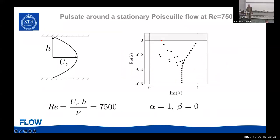We use Poiseuille flow at Reynolds number 7500. This is a typical eigenvalue spectrum. For Reynolds number 7500, we have one eigenvalue slightly above zero — it has a positive growth rate — and all other eigenvalues are decaying. This red dot signifies waves usually called Tollmien-Schlichting waves, which came up from the 1940s when this was first done in channel flows and boundary layers. Now we're going to look at how the stability diagram changes when we add oscillation.